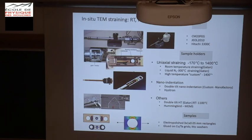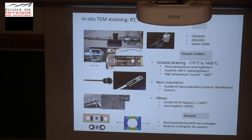This is in-situ TEM straining — a little slide to tell you how we do this. We use very small samples, mainly electropolished in the case of metals. If you FIB your sample, it's not a good idea when you heat them up in the TEM. This is a custom-made holder we use when we want to go above 1,000 degrees C, which is the maximum with a Gatan holder. We can strain the sample and heat it at the same time, and we made some experiments up to 1,400 degrees using this technique.